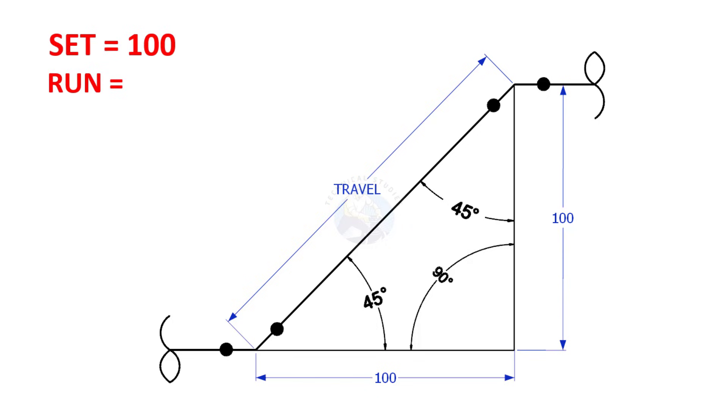Let us calculate the travel if the set and the run are 100. 100 multiplied by 1.414 is 141.4. So here the travel length is 141.4.